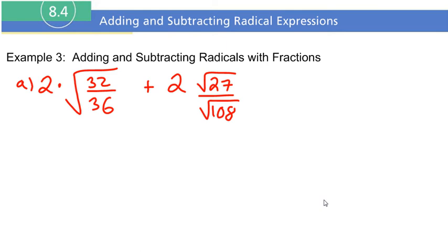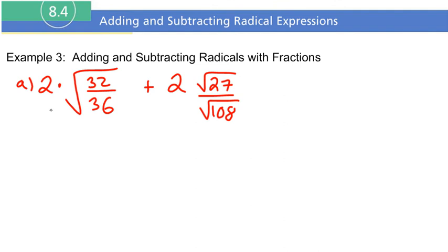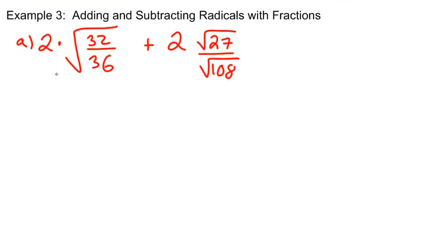All right, going on now to example number three, which is the last example in this section. We're going to add two radicals together, but this time we're throwing in a bit of a loop — fractions. We have two times the radical of 32 over 36, plus two times the radical of 27 over radical 108.